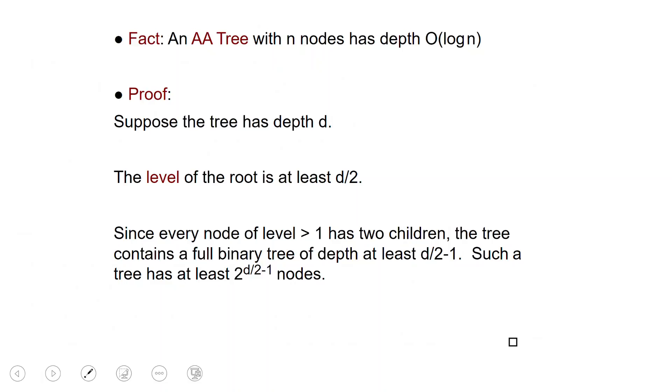An important property is that an AA tree with n nodes has depth order of log n. This is what we want. We want to keep the depth to order of log n so the search is fast. And these conditions that we just required in the definition guarantee that.